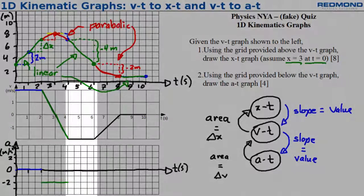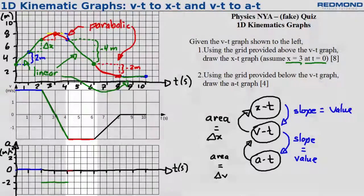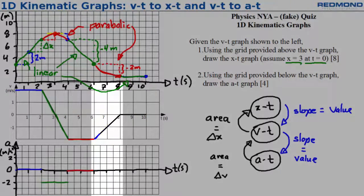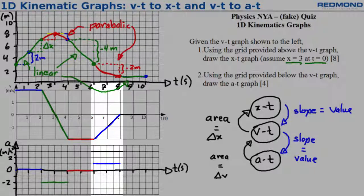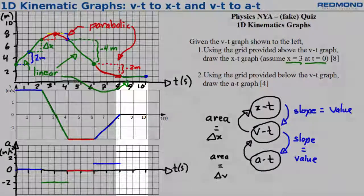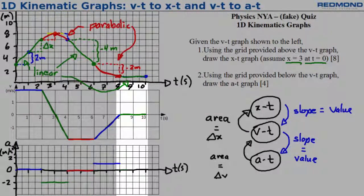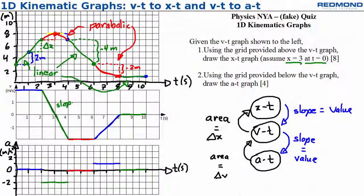From 4 to 6 seconds, the VT slope is 0, so the AT graph value is 0. From 6 to 8 seconds, the VT slope is positive 1 meters per second per second, so the AT graph value is also positive 1 meters per second squared. From 8 to 10 seconds, the VT slope is 0 yet again, so the AT graph is also 0.